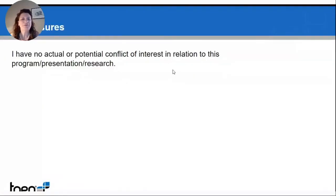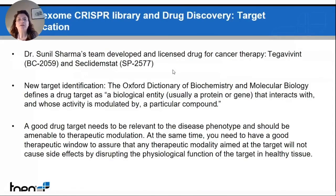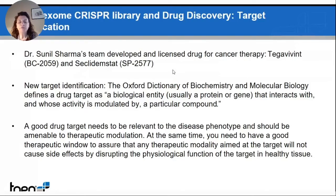Thank you for inviting me. At TGen, our lab is focused on drug discovery and the development of new therapies for cancer. In the last ten years, we were able to produce two drugs now in clinical trials: Tegavivint and Sekridemistat. In drug discovery, a really important step is the identification of a good druggable target — by definition a protein, a gene, or an enzyme that is crucial for the biology and phenotype of the disease and can be modulated by drugs. There are several strategies for drug target identification, but they can be divided in two big groups: target discovery, starting from scratch when you don't have a target or drugs but only knowledge of the tumor biology, and target convolution.